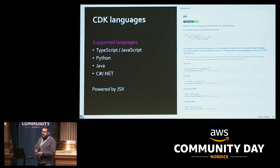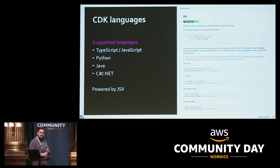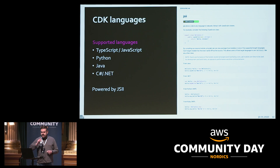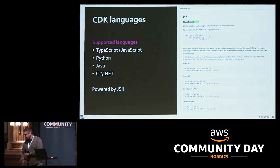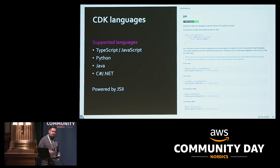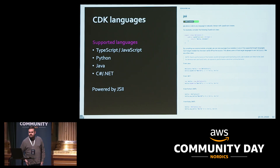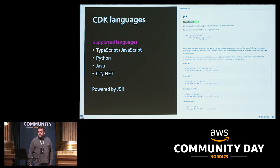CDK itself can be written in different languages: TypeScript, JavaScript, Python, Java, and C#. How that works is it's powered by a module called JSII, which allows you to interact with JavaScript classes from other programming languages. If you want to learn more, the GitHub JSII page has more about it.